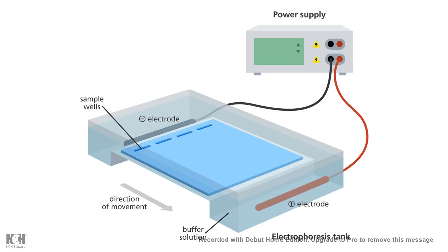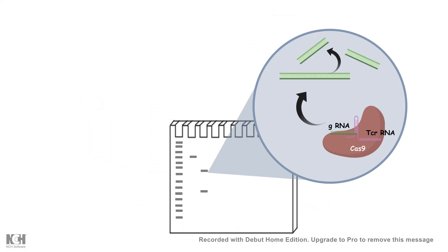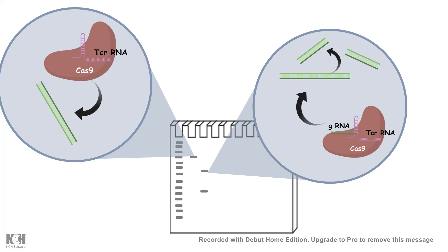They can understand the result by running it into agarose gel electrophoresis. Very simple. They can see if the Cas9 has done its job, then they would obtain cleaved bands of different sizes smaller than the uncleaved one.